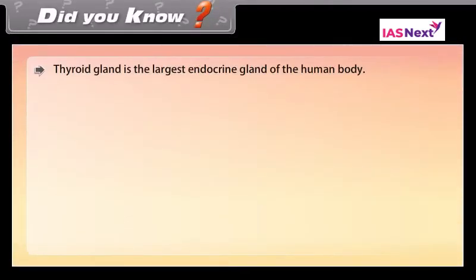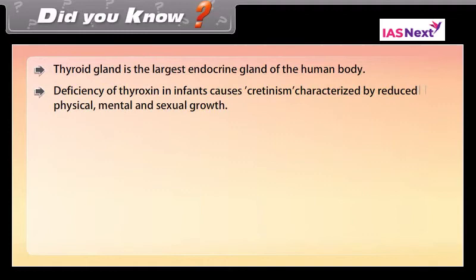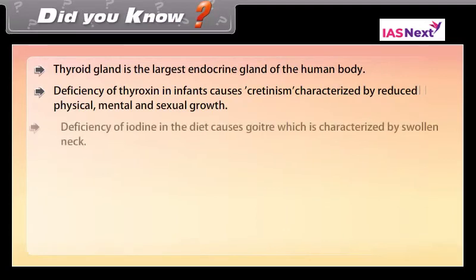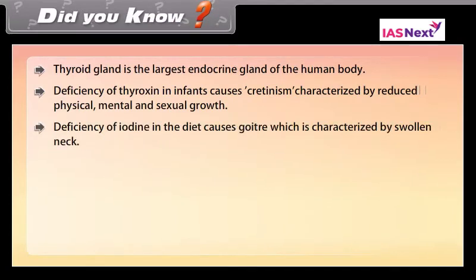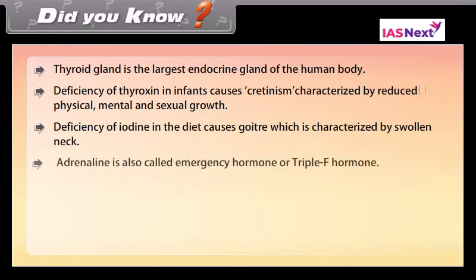Did you know: The thyroid gland is the largest endocrine gland of the human body. Deficiency of thyroxin in infants causes cretinism, characterized by reduced physical, mental and sexual growth. Deficiency of iodine in the diet causes goiter, characterized by a swollen neck. Adrenaline is also called the emergency hormone or triple-F hormone.